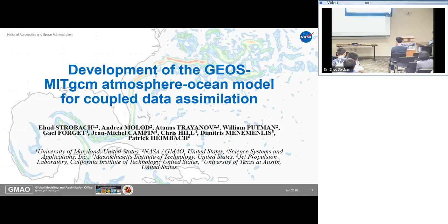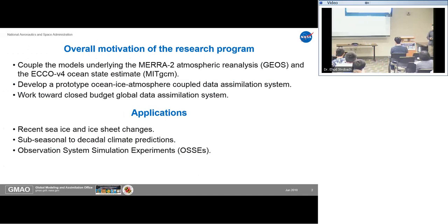This talk is about the development of the GEOS-MIT atmosphere-ocean models for coupled data simulations. This project has an overall motivation to couple the models underlying MERA to atmospheric analysis — this is the GEOS UCM — and ECHO for ocean state estimates, which is the MIT ocean model. We would like to develop a prototype ocean-ice-atmosphere coupled data simulation system by exploiting the data simulation capabilities of each of these two models.